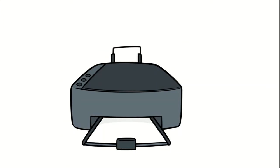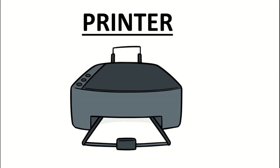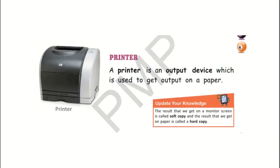The next output device is printer. A printer takes electronic data from the computer and generates a hard copy of it — that is, you can get a print on paper from the printer. The most common printers are inkjet printers, which we use at our homes as well. Let's read about printer from the book: a printer is an output device which is used to get output on paper.